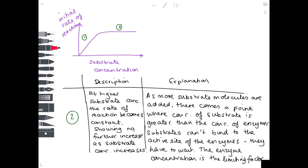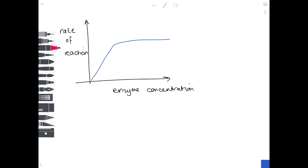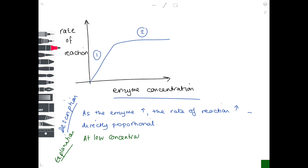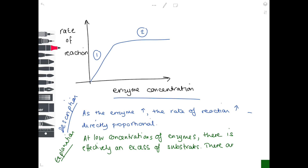This leads us into looking at the effect of enzyme concentration on the rate of reaction. The graph is extremely similar to the one we've just looked at, but now the x-axis has enzyme concentration on it. For portion one: as enzyme concentration increases, the rate of reaction increases — a directly proportional relationship. The explanation is that at low enzyme concentrations there is an excess (plentiful supply) of substrate molecules but no free enzymes to act upon them, so enzyme concentration is the limiting factor.